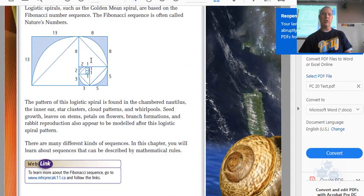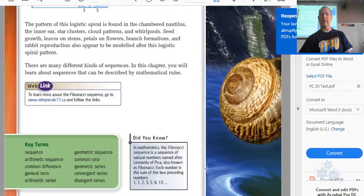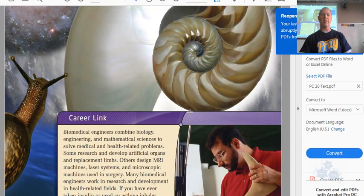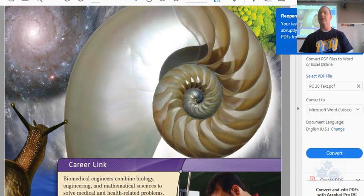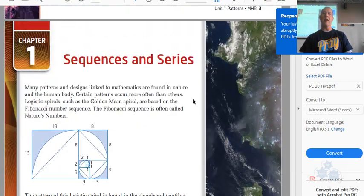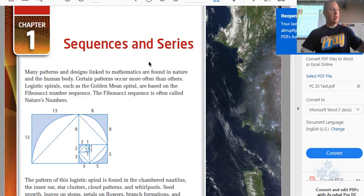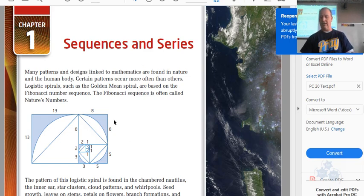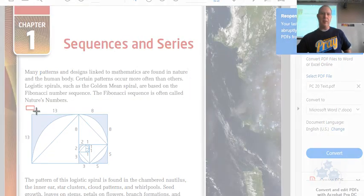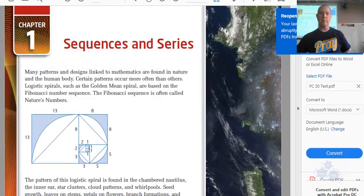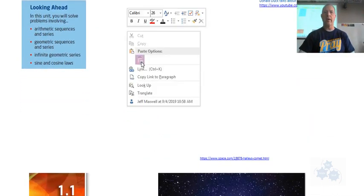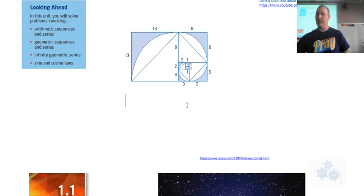We talk about this spiral right here. This is a special spiral. We see this in nature, and in the video that we just watched together as a class, you see it in ancient architecture and sculptures and different things like that. When we talk about sequences or lists of numbers, this is a special sequence.